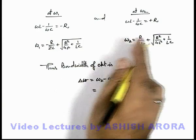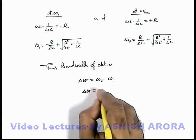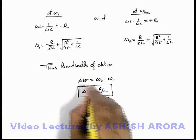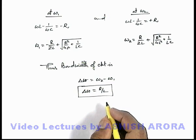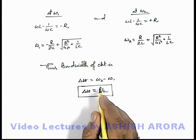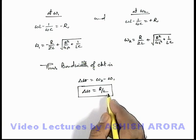And on substitution of these two values, we are getting the bandwidth is equal to R by L. This is a very useful relation you should always keep in mind that bandwidth of a series R-L-C circuit we can directly write as a ratio of resistance to the inductance.